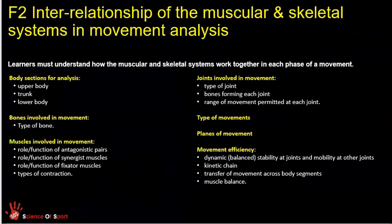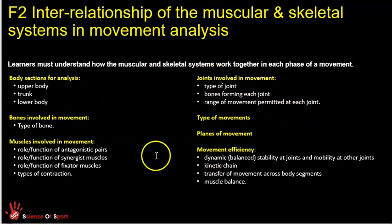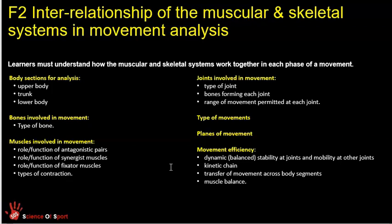So the specification, by the time we get to the F Learning Aims, really draws together knowledge from the muscular system, the skeletal system, plus a few other elements. This is all movement stuff that you should have done before. These two sections — the body section and the movement efficiency parts — are relatively new and added onto your knowledge, but much of it is stuff that you've learnt in the earlier learning aims.